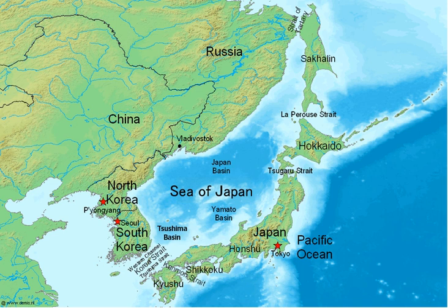The International Hydrographic Organization, the international governing body for the naming of bodies of water around the world, in 2012 recognized the term Sea of Japan as the only title for the sea, and stated they would likely review the issue again in 2017.